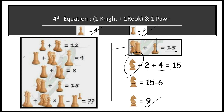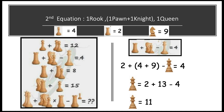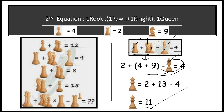Now we have all three values needed for the second equation: rook = 2, knight = 9, pawn = 4. The second equation is: rook + pawn + knight − queen = 4. Substituting: 2 + 4 + 9 − queen = 4, so queen = 15 − 4 = 11. Therefore, queen = 11.